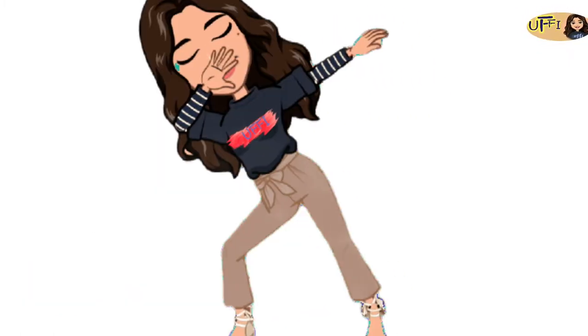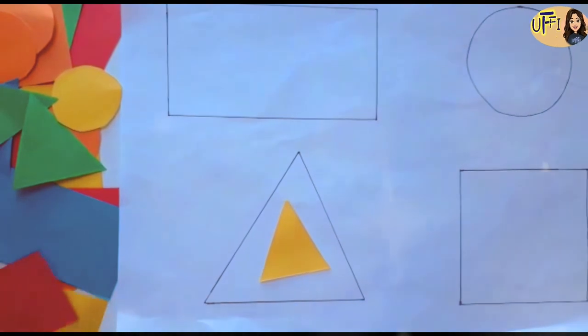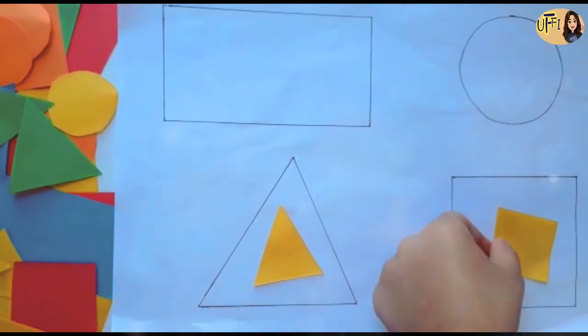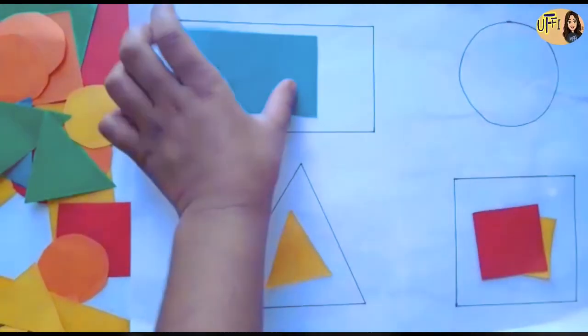We have revised the shapes. Let's do the activity again. A triangle. A square. Very good. Another square. Well done. Well done Annie.